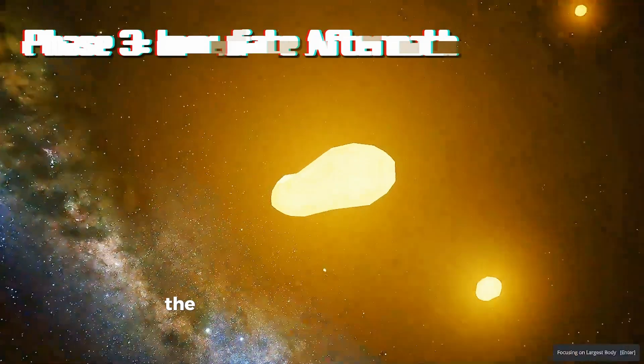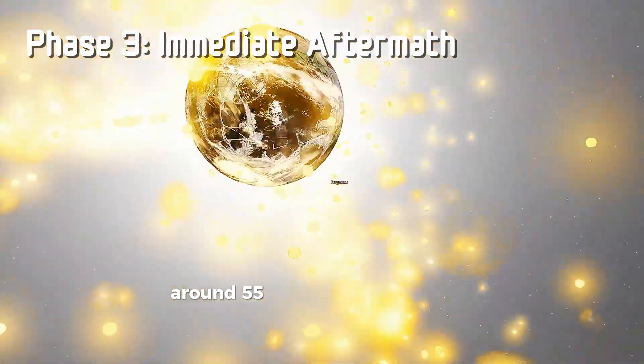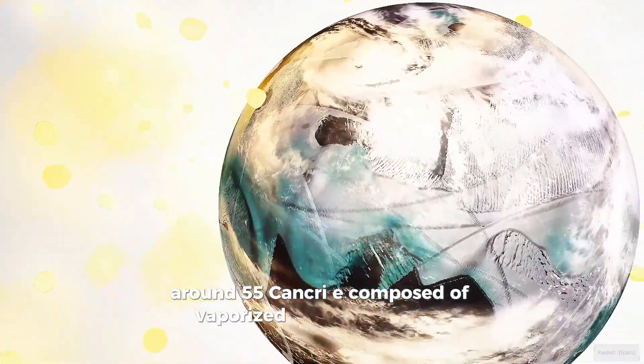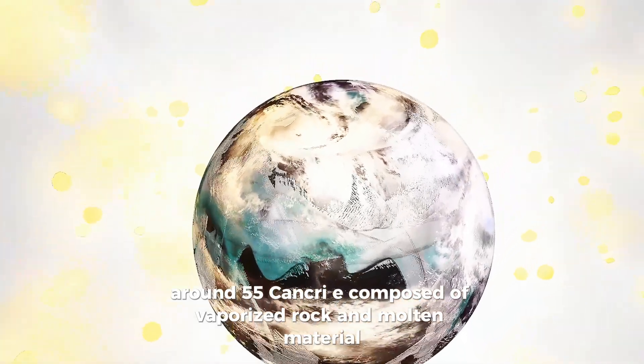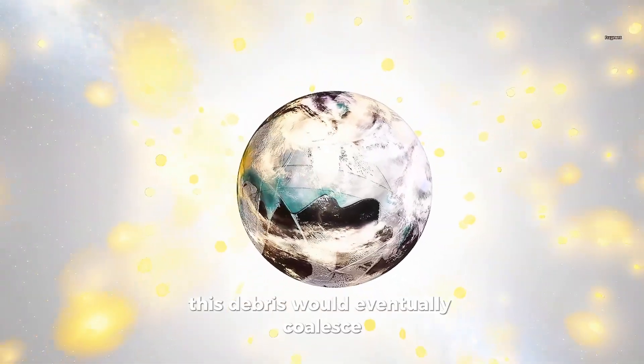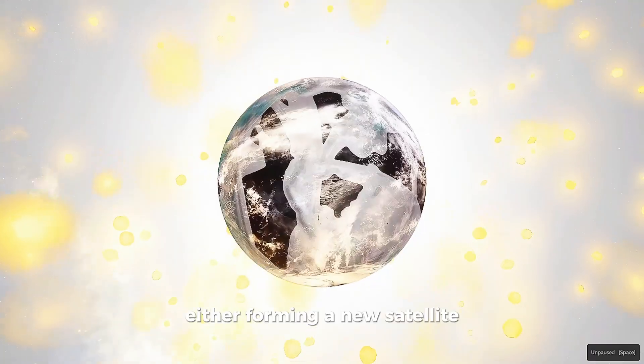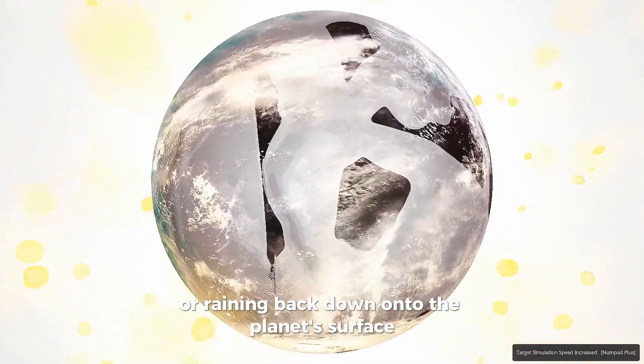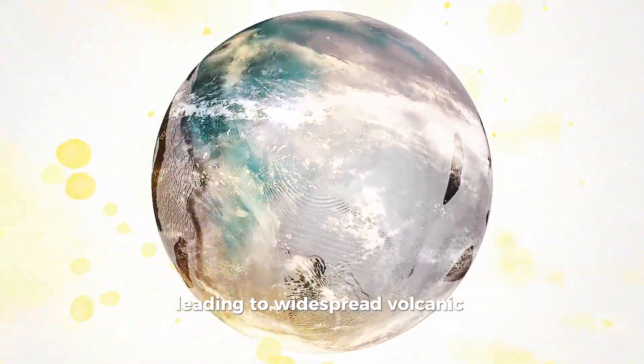The collision would likely create a transient debris disk around 55 Cancri E, composed of vaporized rock and molten material. This debris would eventually coalesce, either forming a new satellite or raining back down onto the planet's surface, leading to widespread volcanic activity and further heating.